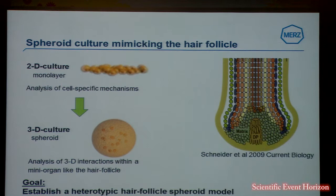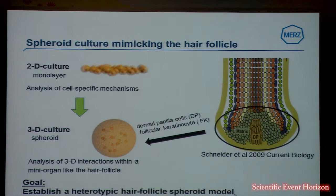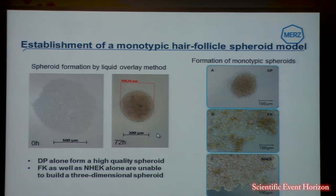To go one step further, away from this 2D culture system to a 3D spheroid culture system that mimics more closely the hair follicle, you can see in this schematic drawing the dermal papilla surrounded by the follicular keratinocytes resembling the hair matrix. We tried to use these cells — the dermal papilla cells and the follicular keratinocytes — to establish a heterotypic hair follicle spheroid model.